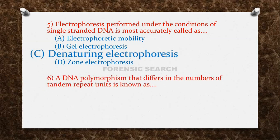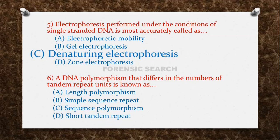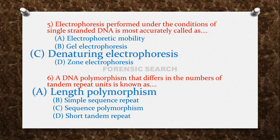The next question: a DNA polymorphism that differs in the numbers of tandem repeat units is known as? Option A: Length Polymorphism. Option B: Simple Sequence Repeat. Option C: Sequence Polymorphism. Option D: Short Tandem Repeats (STR). The correct answer is option A — Length Polymorphism.